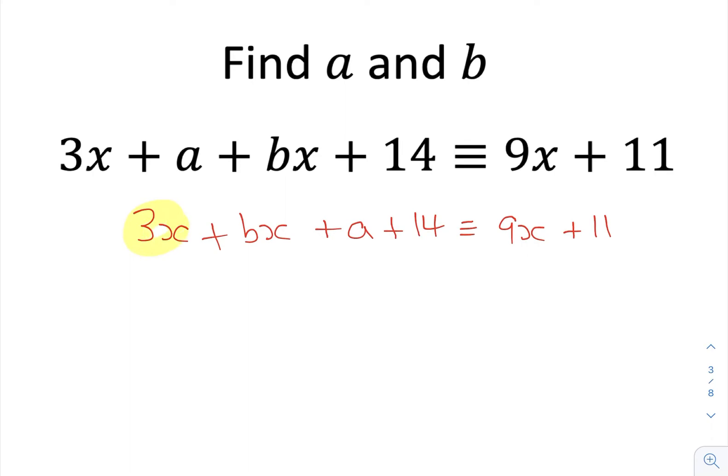So this time I've got two terms on the left-hand side with x in, these two. So I'm going to equate these. So 3x plus bx must be equal to 9x. And now I can either write this out, you can probably do this by looking at it here. 3x plus bx to give you 9x, well then b's got to be 6.